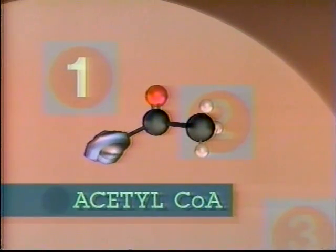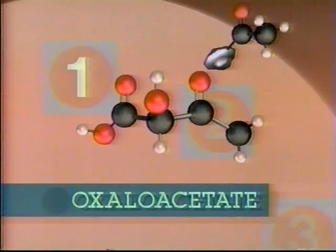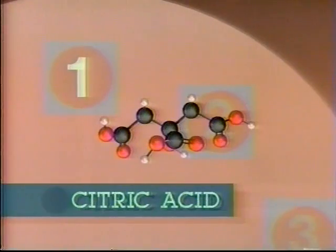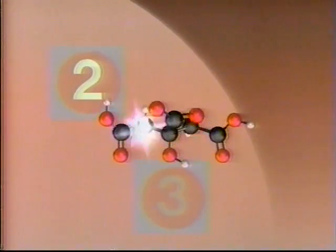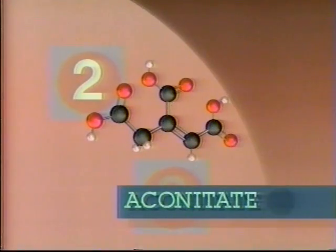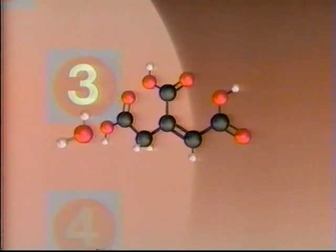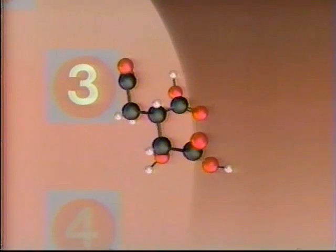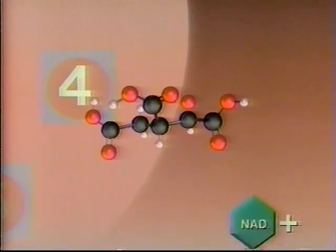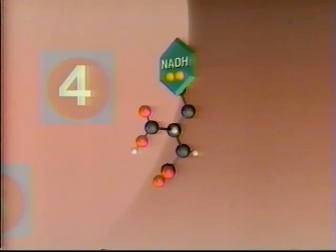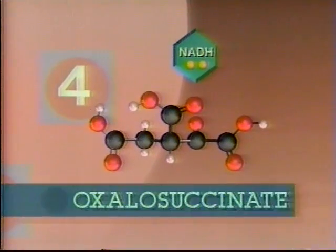Acetyl-CoA hooks up with the four-carbon oxaloacetate, producing the six-carbon citric acid. Citric acid loses water to form aconitate. Aconitate picks up water and is twisted into isocitrate. Isocitrate encounters an NAD+, forming the energy carrier NADH and oxaloacetate.